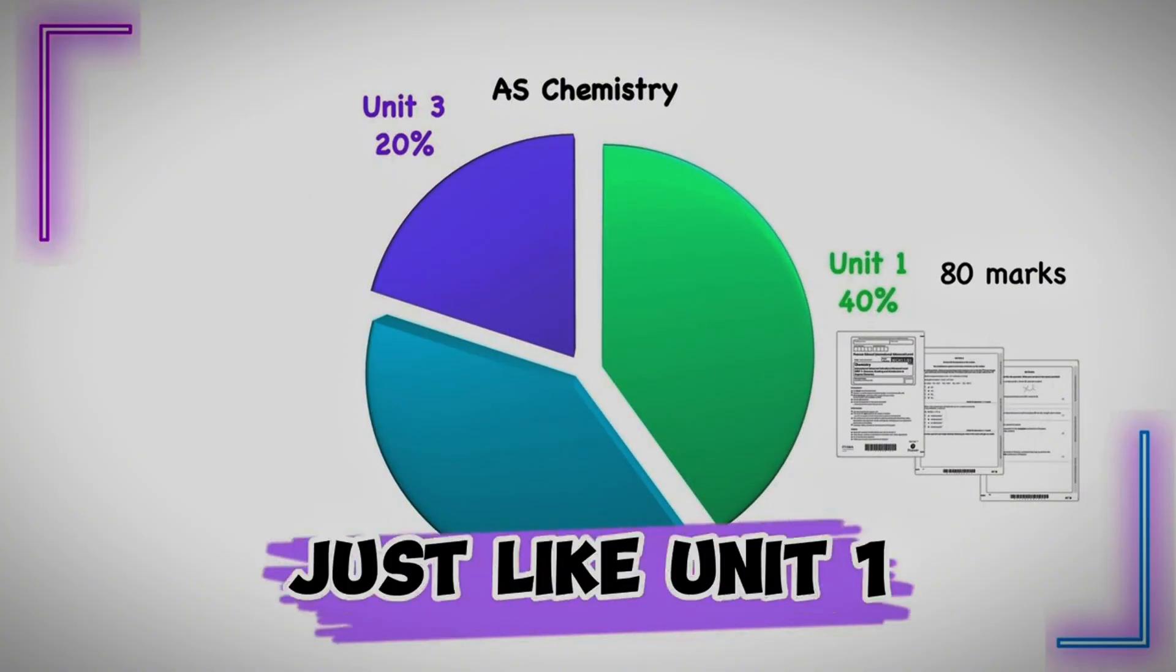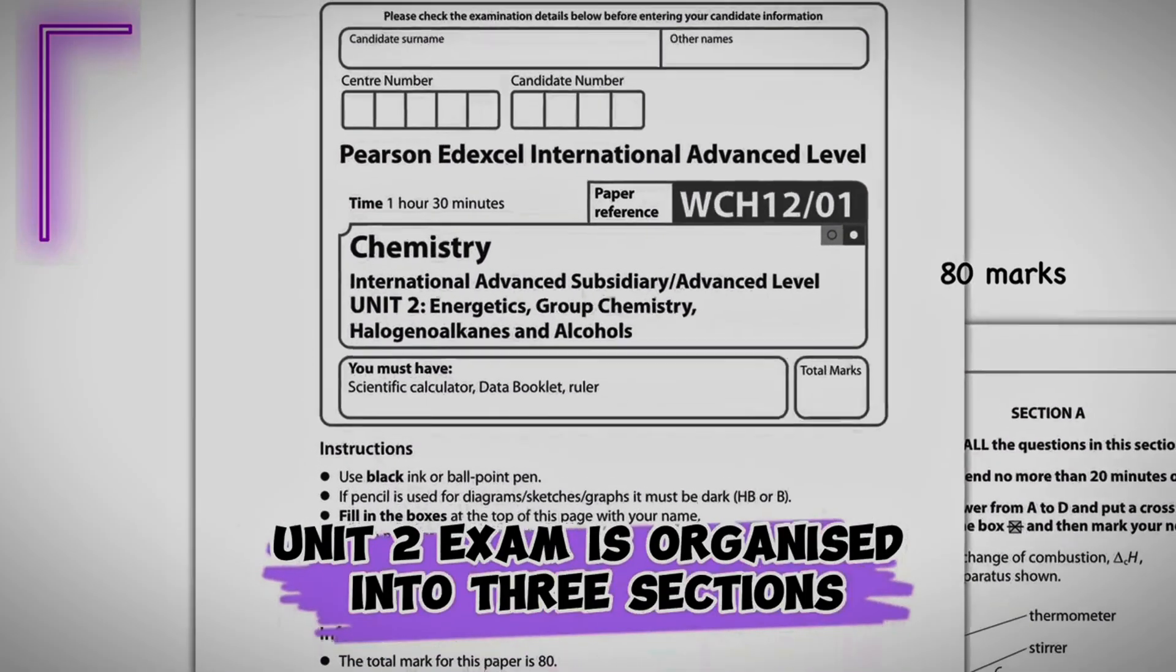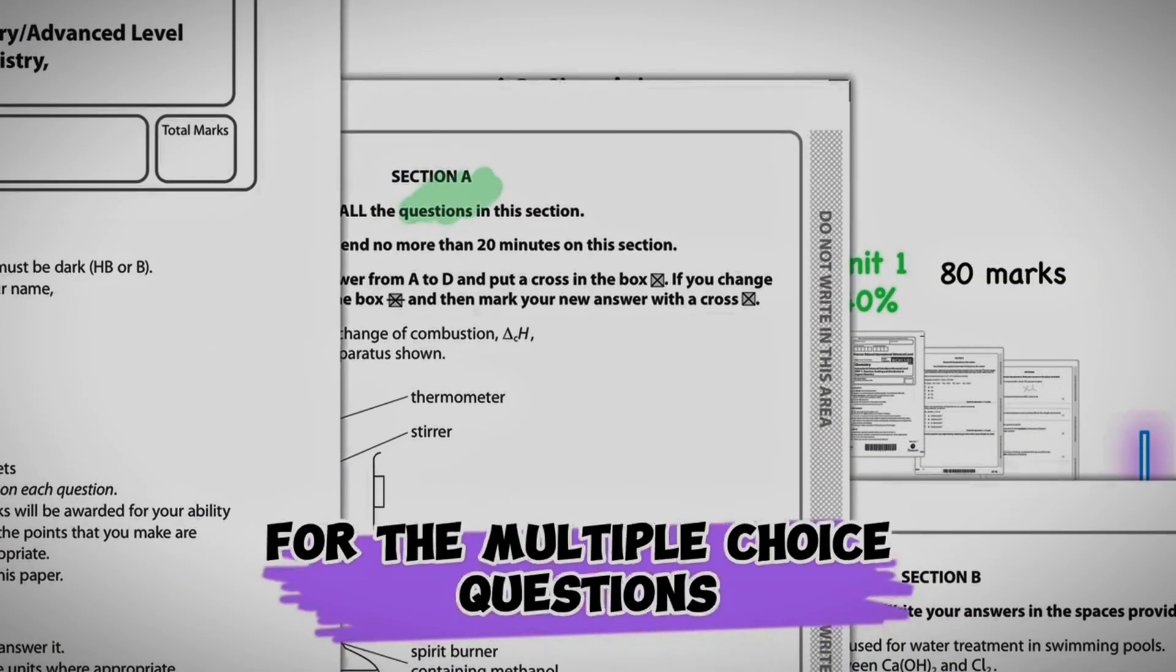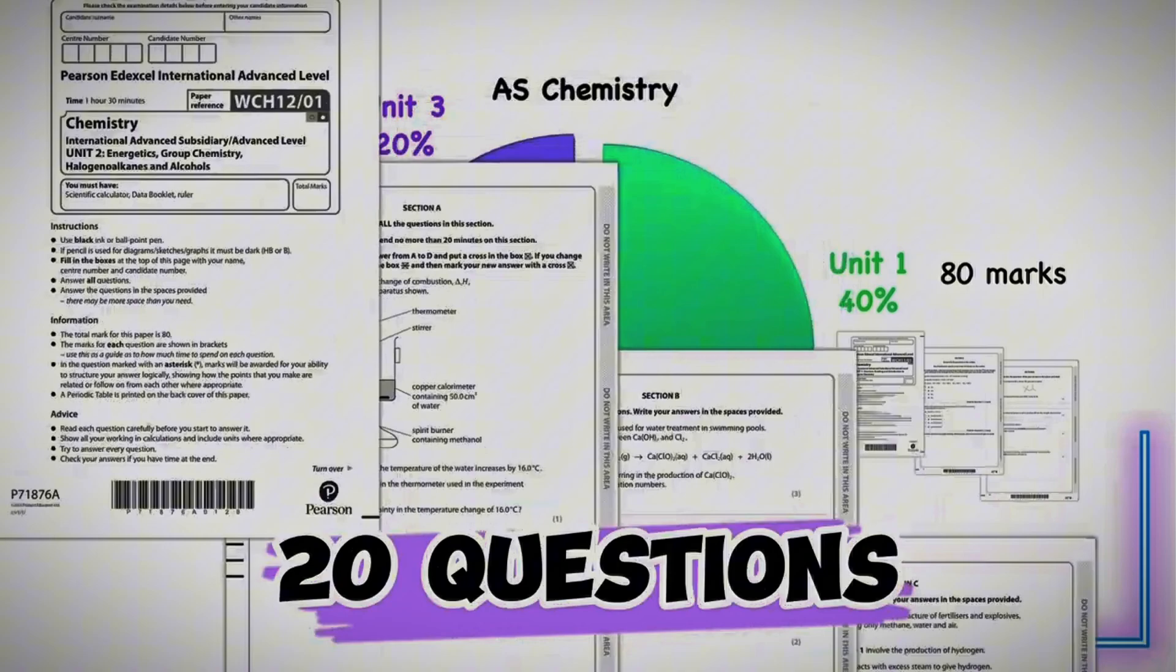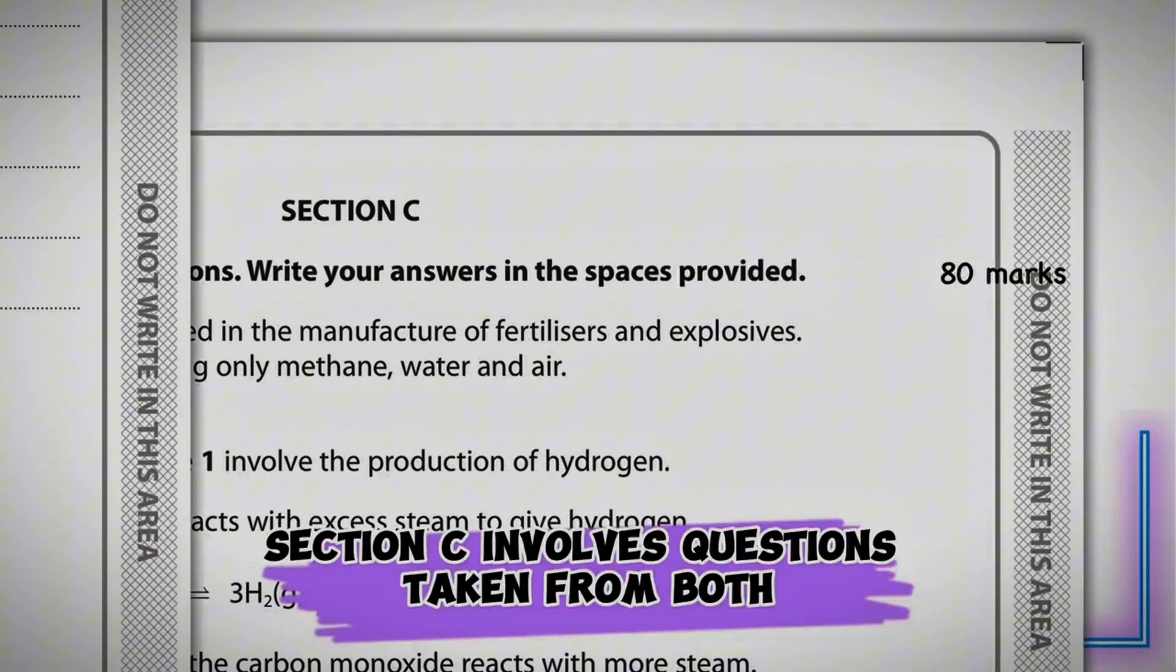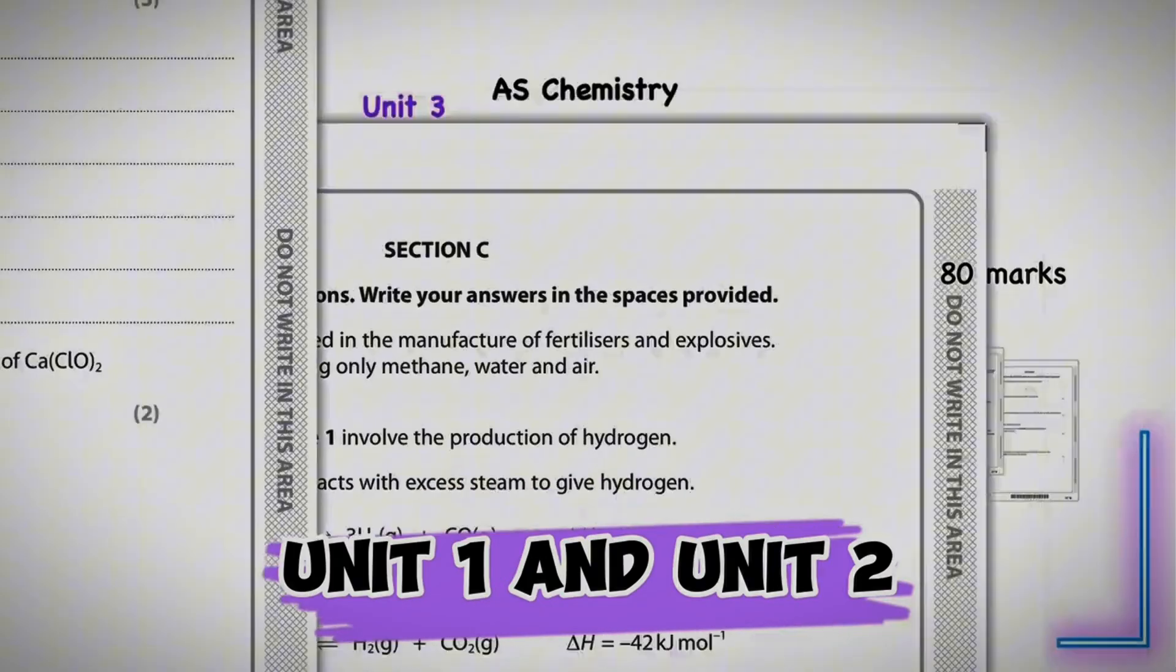Just like unit 1, unit 2 is also worth 40%. Unit 2 exam is organized into three sections. You still have section A for the multiple choice questions, 20 questions. You have section B for written answers. Section C involves questions taken from both unit 1 and unit 2.